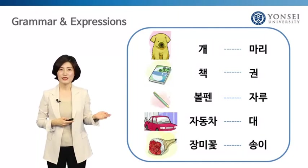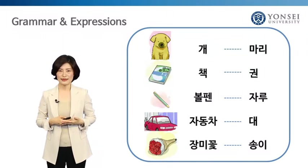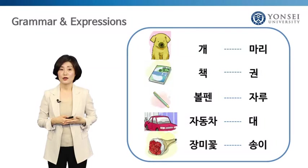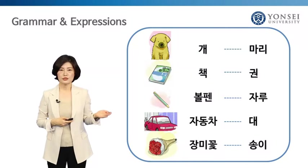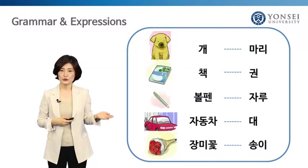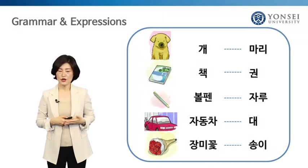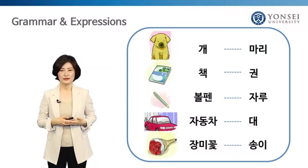As I have mentioned before, there are many counting units in Korean. When you count animals like a dog or a cat, use the word 마리. 권 is used for counting books. 자루 for pens and pencils. 대 for cars. And 송이 for flowers.